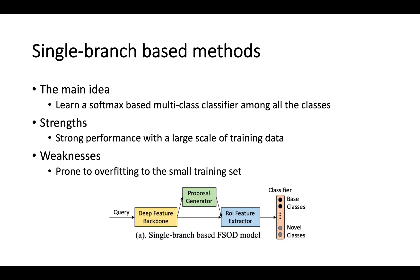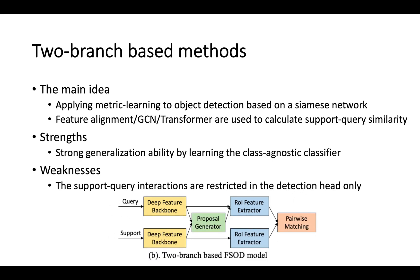Single-branch-based methods use a softmax-based multi-class classifier among all classes on top of the detection model. They usually have strong performance with large-scale training data, but are prone to overfitting on small training sets. Two-branch-based methods apply metric learning to object detection with a Siamese network, and usually have stronger generalization ability by learning a class-agnostic comparison network between the query and support branch, which is shared among all classes.